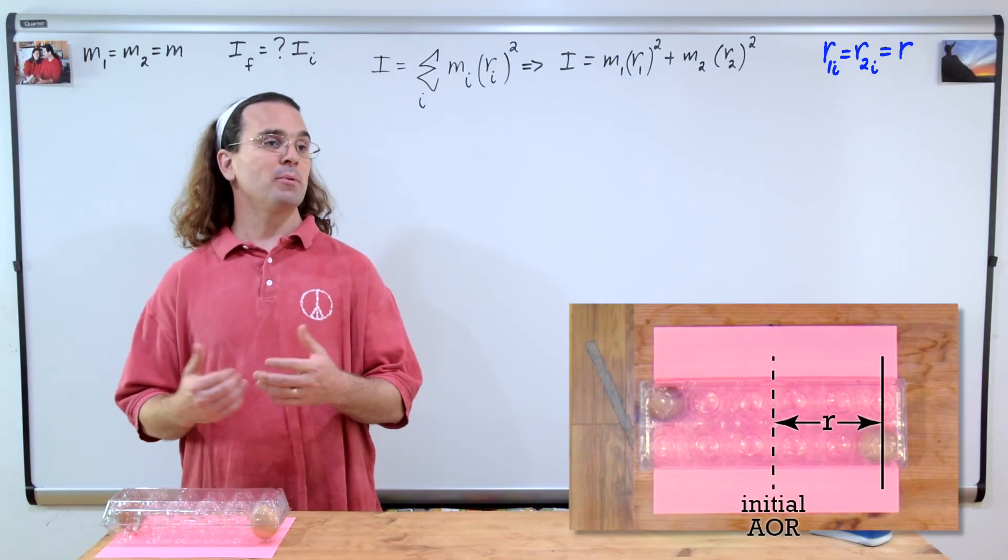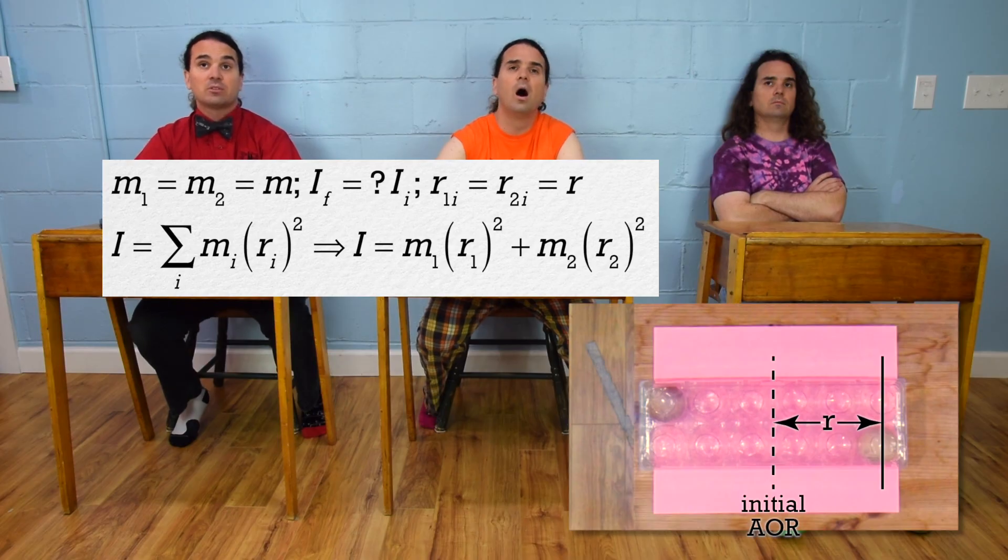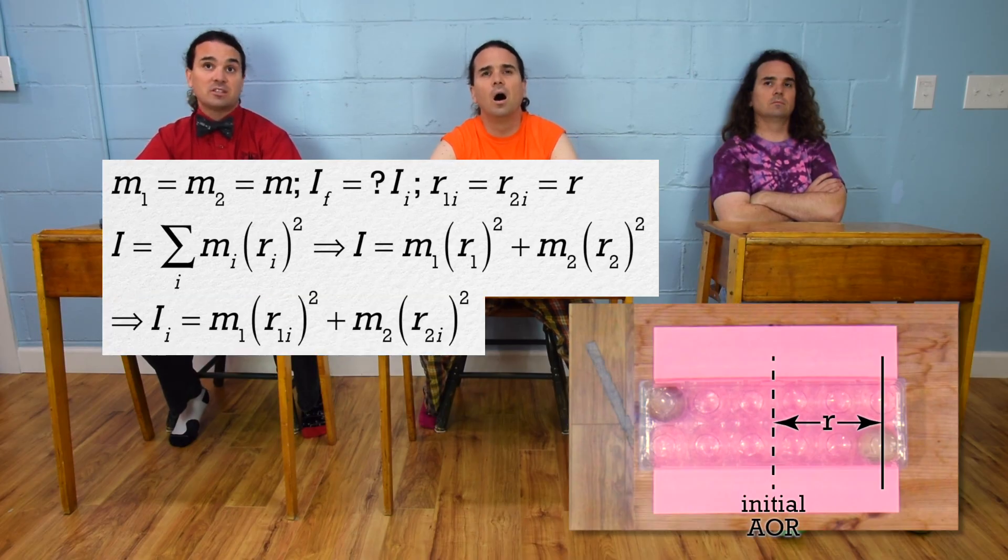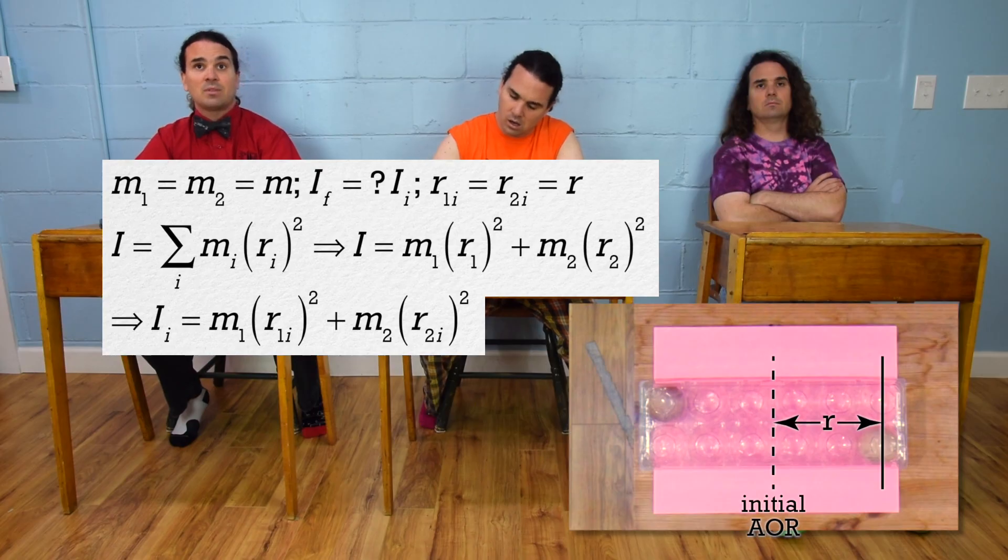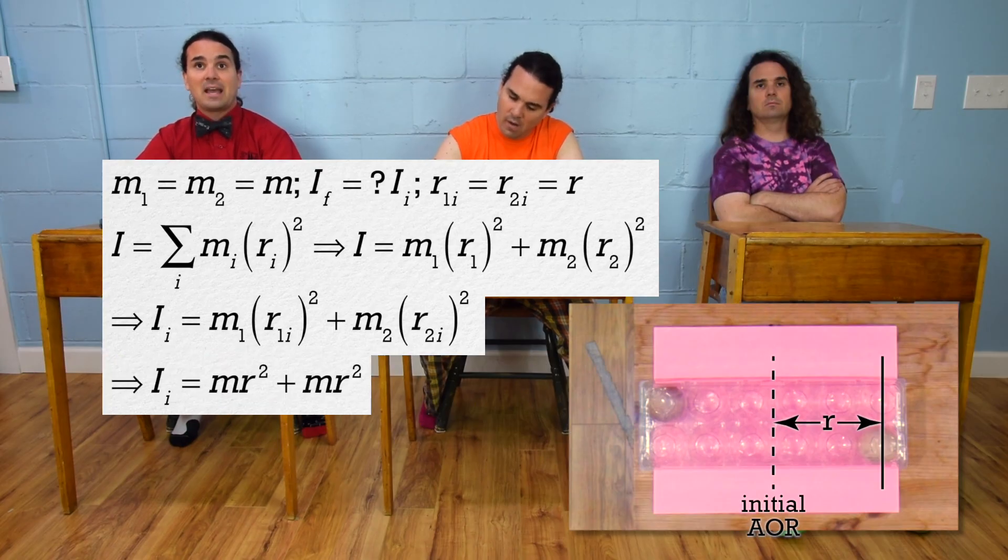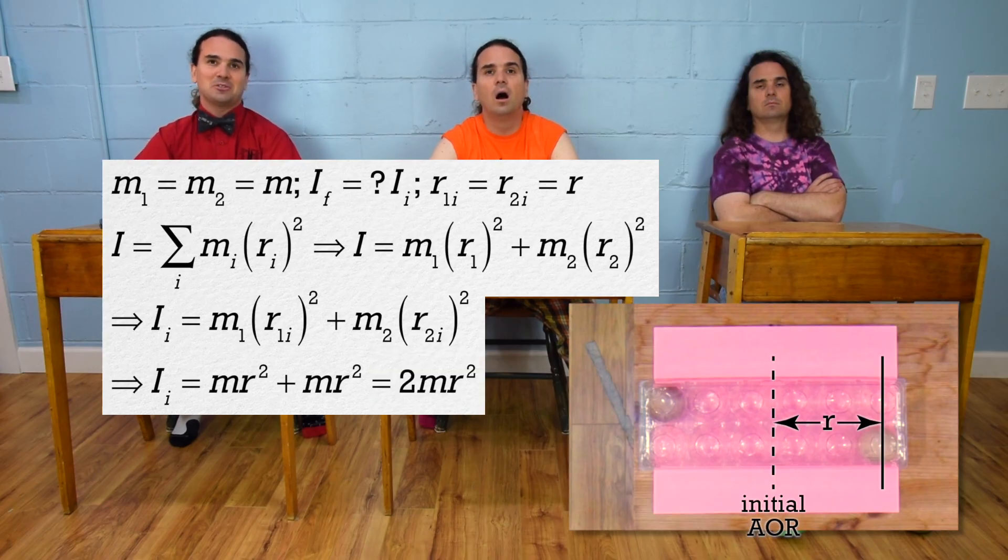Okay, the initial moment of inertia equals m₁(r₁ᵢ)² + m₂(r₂ᵢ)². We can replace both masses with m and both distances with r, giving us mr² + mr² = 2mr².